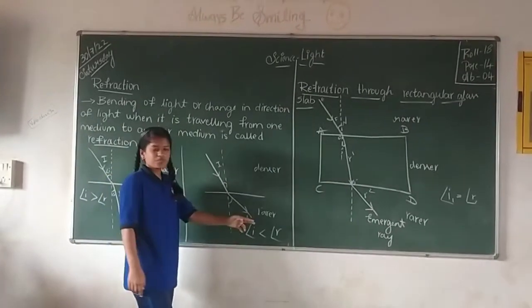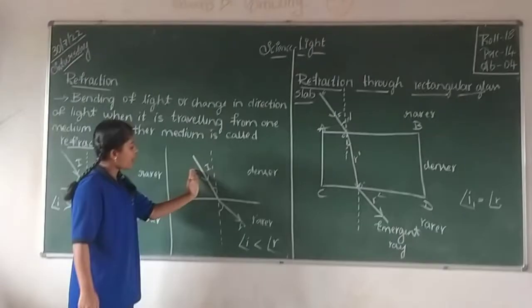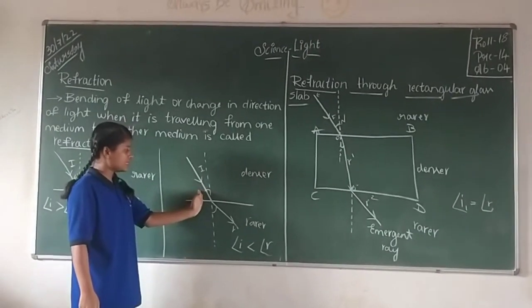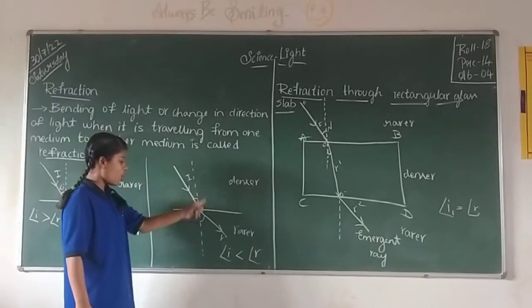So second situation comes where we have first denser medium and next the rarer medium. So here you have the angle of incidence which is perpendicular and normal also.